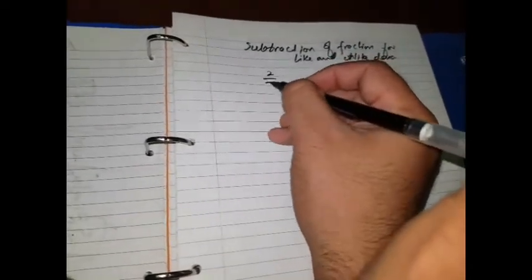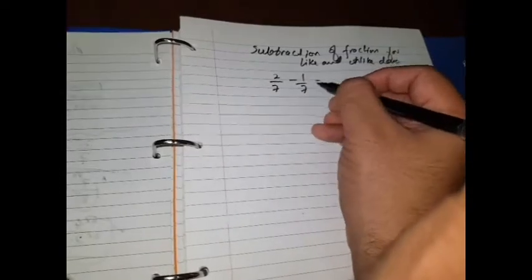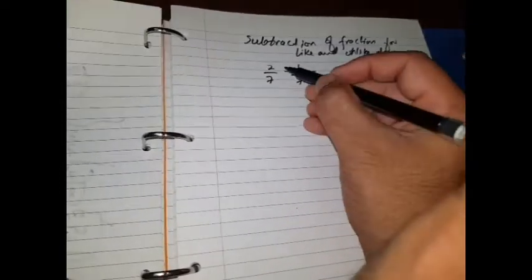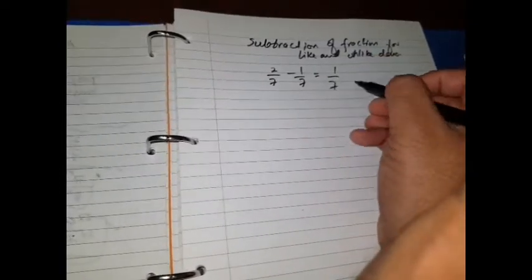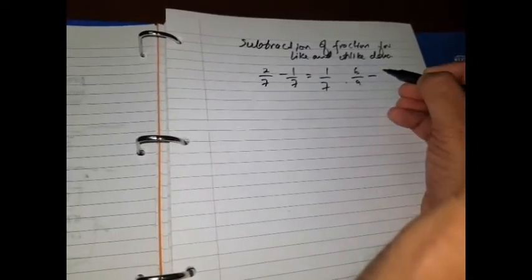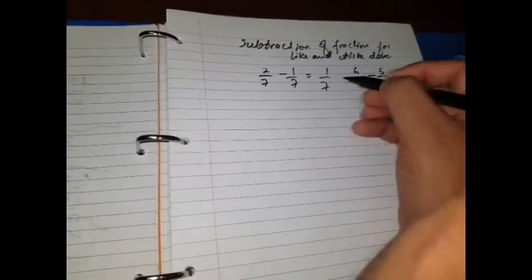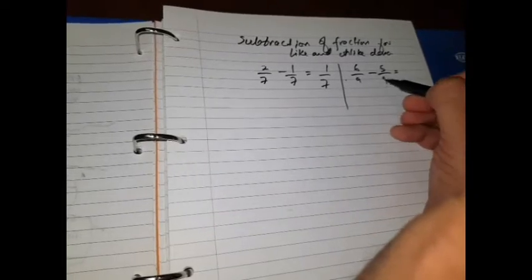So, 2 over 7 minus 1 over 7. If denominators are same, very simple: 2 minus 1, 1 over 7 is my answer. 6 over 9 minus 5 over 9, again very simple. Denominators are same, I don't have to push myself on the calculation: 6 minus 5 is 1, 1 over 9 is my answer.